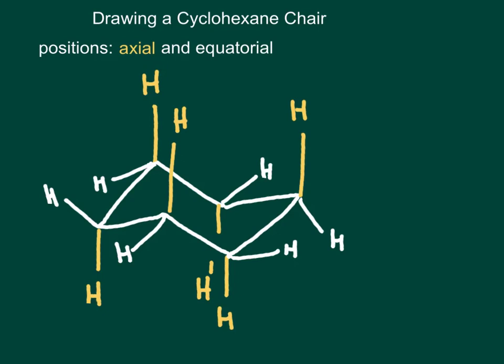They're called axial because if you imagine an axis going through the center of the cyclohexane, they would be parallel to that axis. When we go to draw this, the chair is a zigzag: carbons that zigzag up have an axial hydrogen straight up, and carbons that zigzag down have an axial hydrogen straight down.